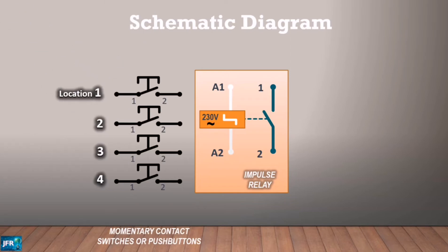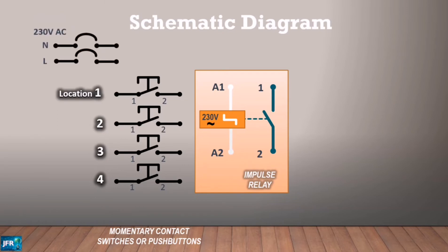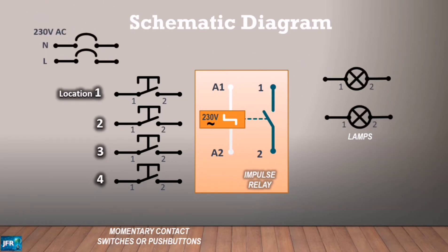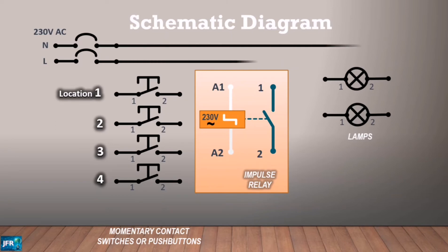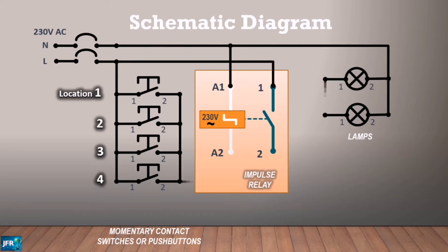The impulse relay can be used in light zoning, where control of light can be placed in different locations. Extension of lamps and switches is convenient and easy compared to other switching systems using three-way or four-way switches.